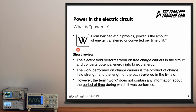Before we dive into the definition of power, let's quickly recap some items from previous videos. The first is that the electric field performs work on free charge carriers such as electrons in an electrical circuit, converting potential energy into kinetic energy. Second, the work performed on charge carriers is the product of charge, field strength, and the length of the path traveled in the electric field. We talked about the analogy between the electric circuit and an apple hanging from a tree — the apple has potential energy, just as the electron in the electric field does.